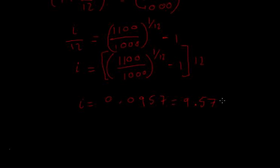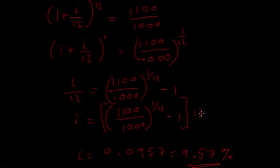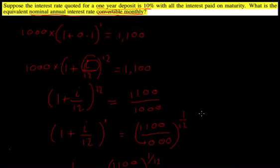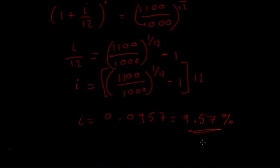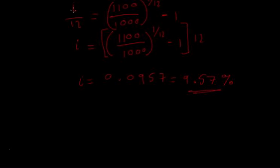And I'll write it the way I said it: 9.57%. So this is a nominal annual amount. So this is the answer to the question—the nominal annual interest rate compounded or convertible monthly.